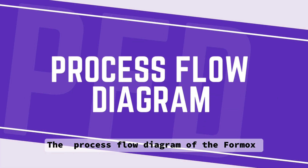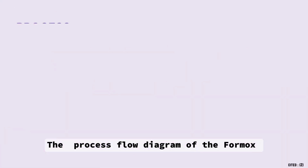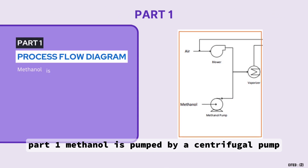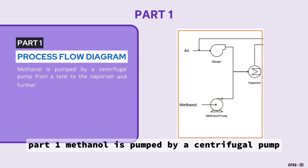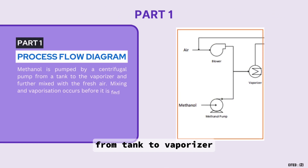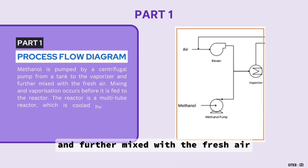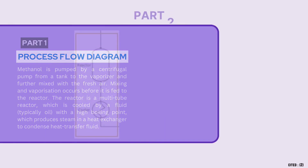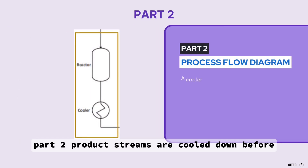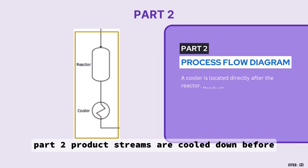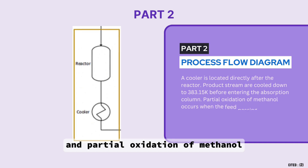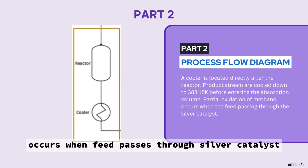The process flow diagram of the Formix process has three main parts. In part one, methanol is pumped by a centrifugal pump from a tank to a vaporizer, mixed with fresh air, and fed to the reactor. In part two, product streams are cooled down before entering the absorption column, where partial oxidation of methanol occurs as the feed passes through a silver catalyst.